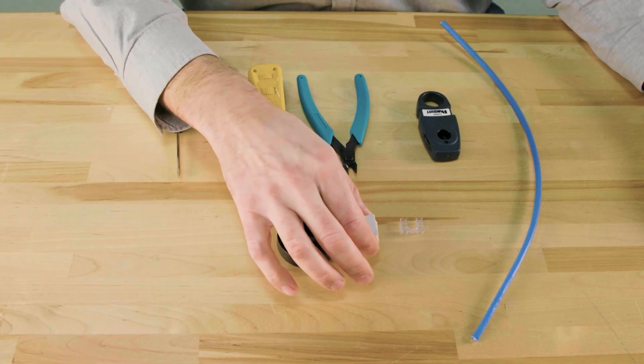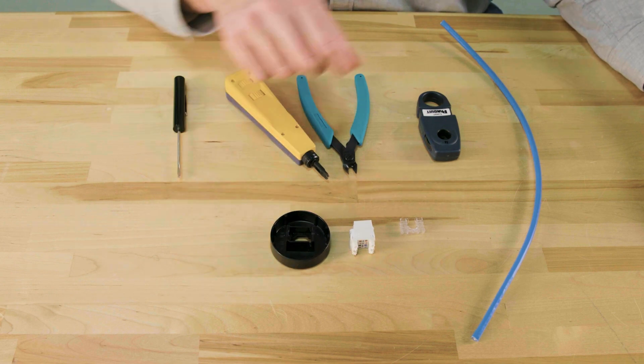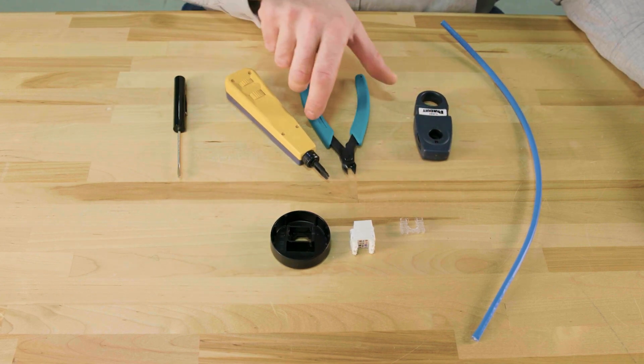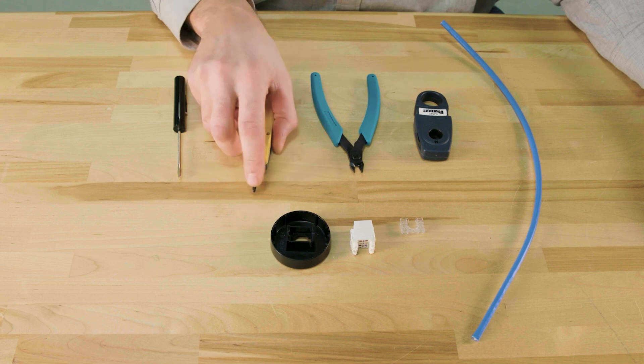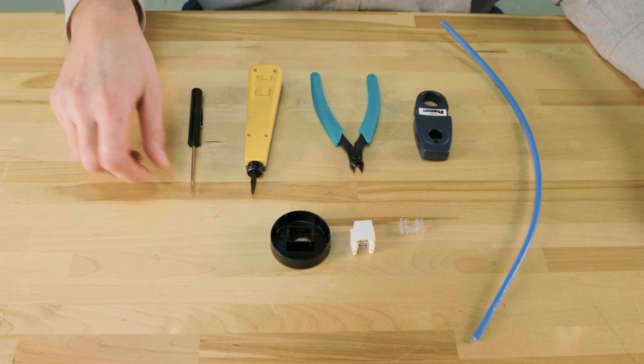Here's how to terminate the Panduit NetKey jack. You will need a termination base, a wire stripper, a wire snipper, the 110 termination punchdown tool with a cut blade, and a small flathead screwdriver.